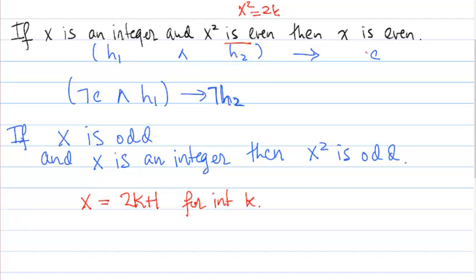So the proof by contrapositive is easier because now we have an expression for x that we can work with, and that's equal to 2k+1. And our goal now is to show that x² is odd.